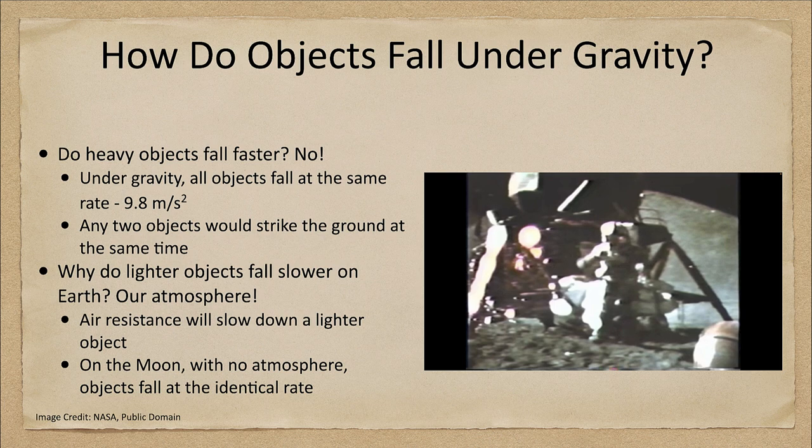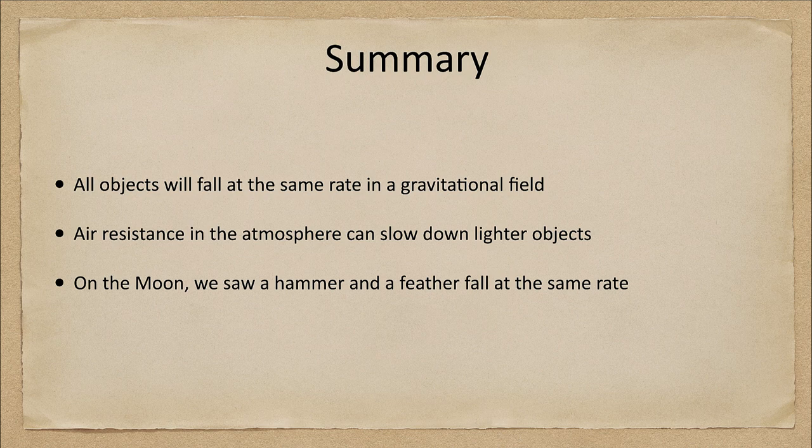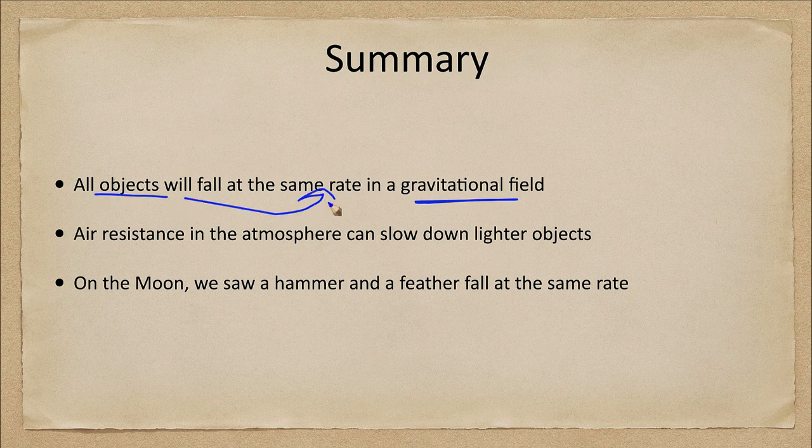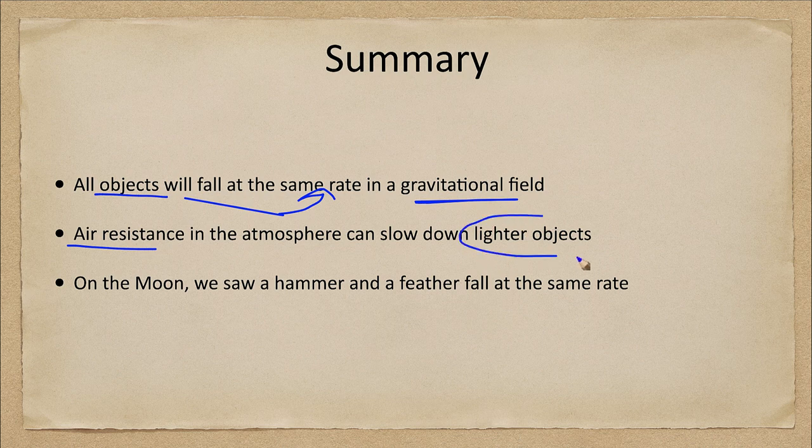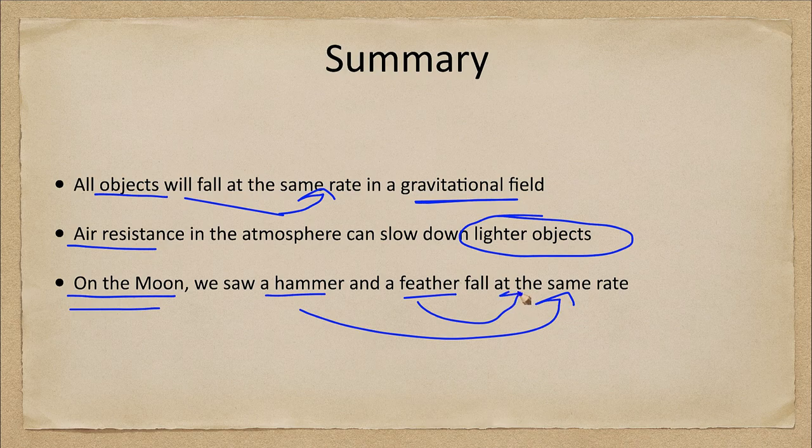So let's go ahead and finish up with our summary here. What we've looked at is that all objects in a gravitational field will fall at exactly the same rate. Every object will fall at exactly that same rate. Air resistance in the atmosphere can slow down the lighter objects. However, as we saw in the video clip, on the moon a hammer and feather will fall at the same rate in the absence of the air resistance of an atmosphere.